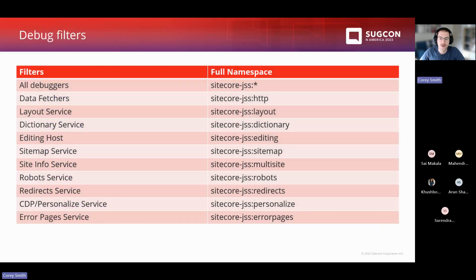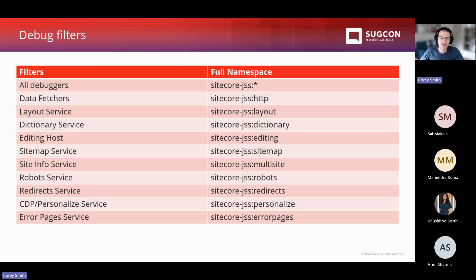Here's an exhaustive list of all the filters that Sitecore makes available for debug logging. To turn on all debuggers, you just use the sitecore:jss:* wildcard. You can filter down to HTTP requests or data fetchers, layout service, dictionary service, or the editing host for experience editor. If you're using headless SXA, there's specific debug logging for the sitemap, site info, robot, redirect, and error pages services. And if you're using CDP or personalization, there are special debug log filters for those as well.